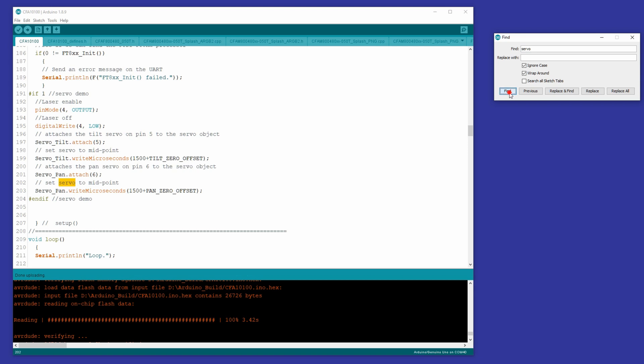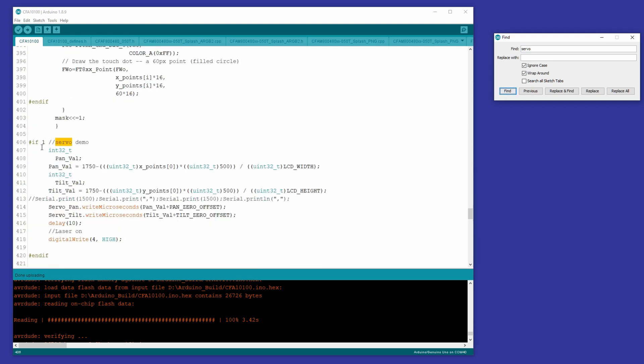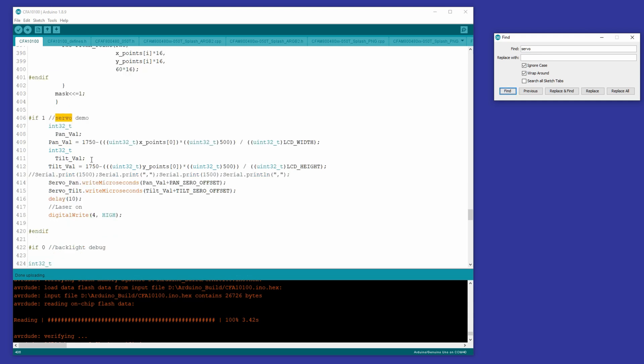All right, then the only other, once we've got these servos initialized here in the setup function, the only other things we care about is if there's a touch and if there's not a touch. So this code down here is within the code that's detected that there's a touch on the FTDI.